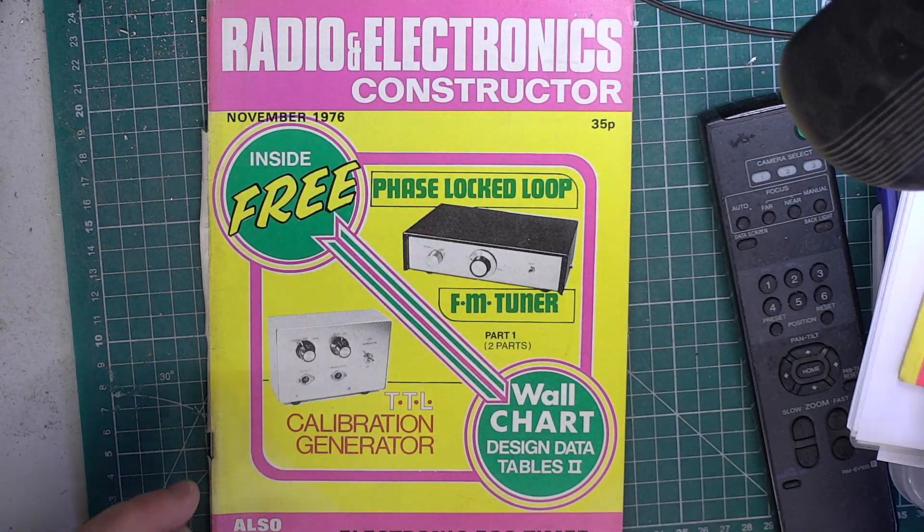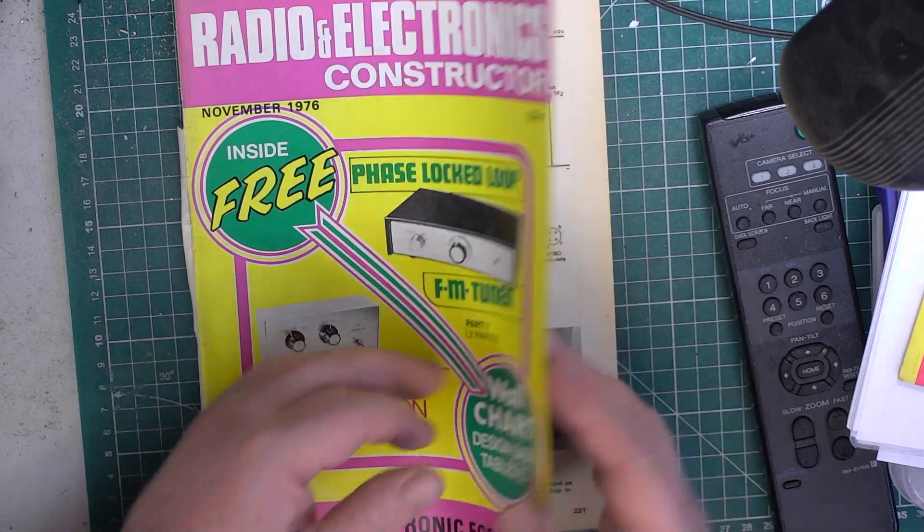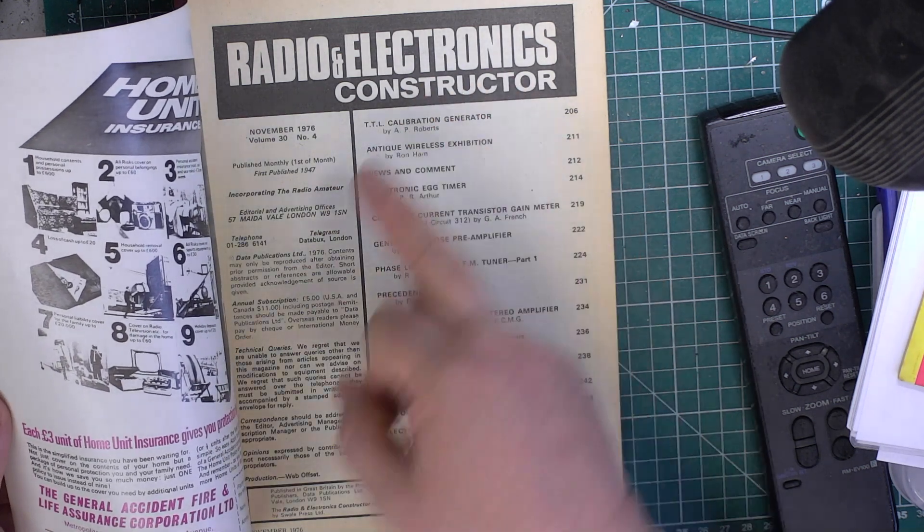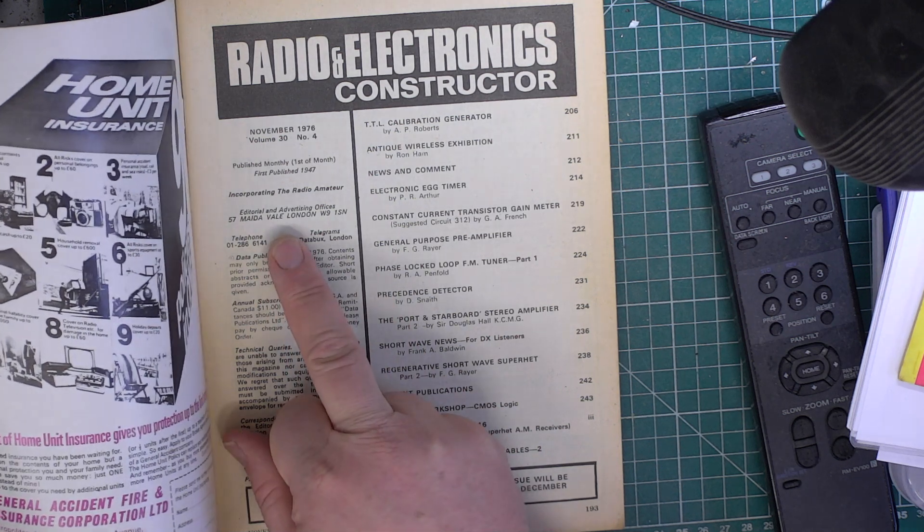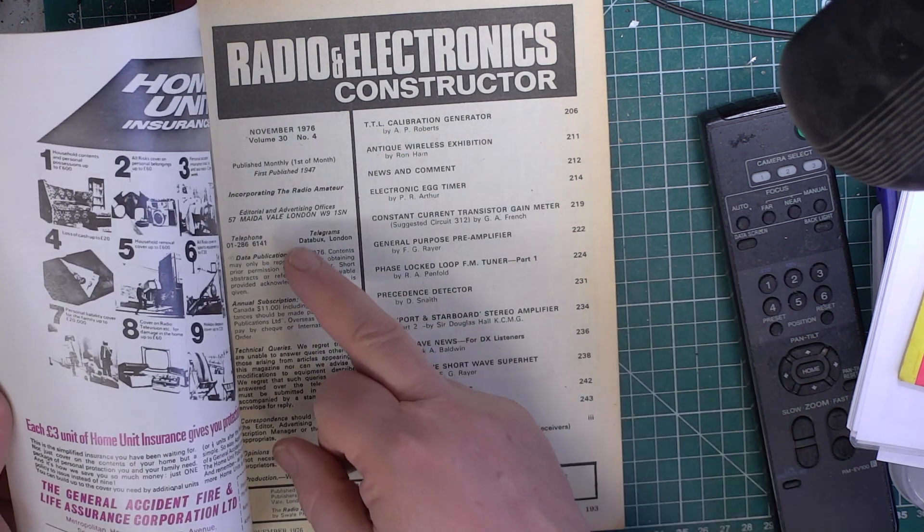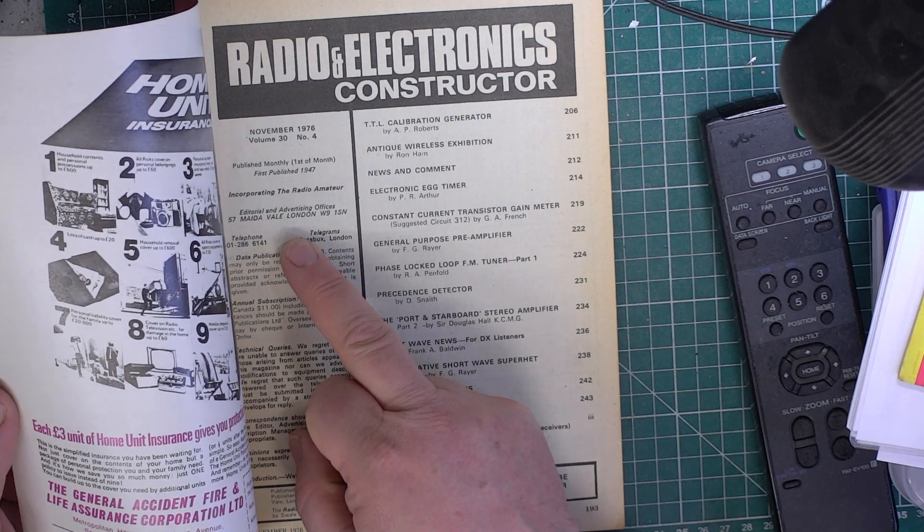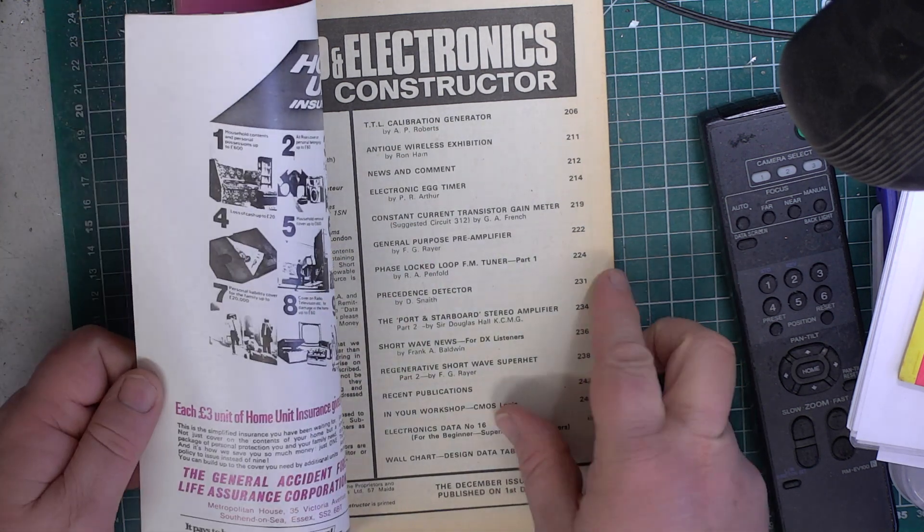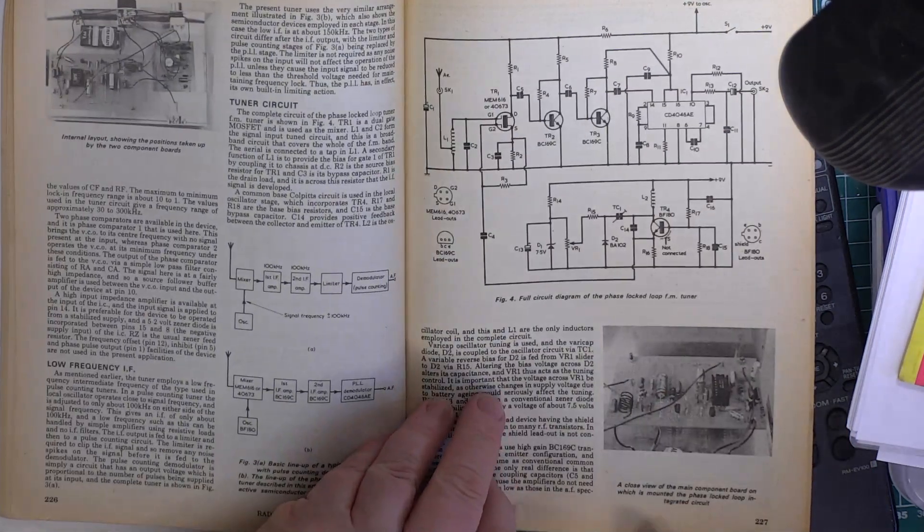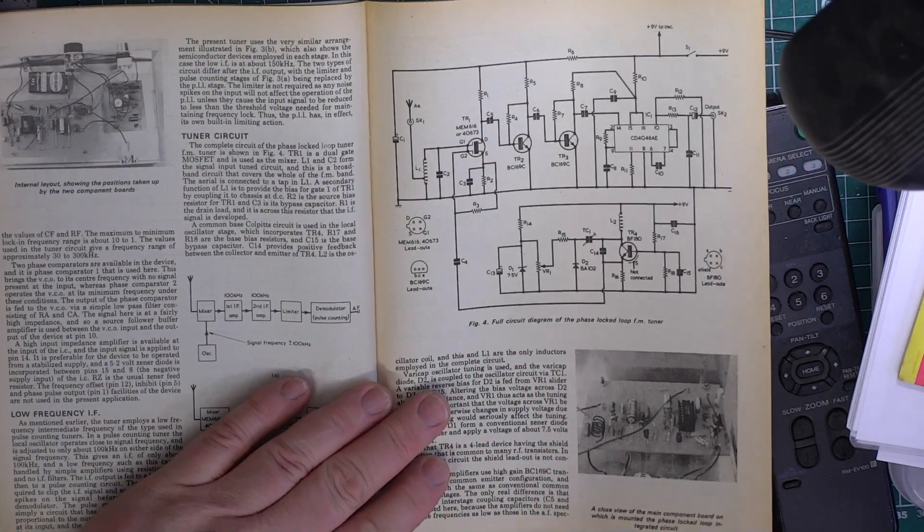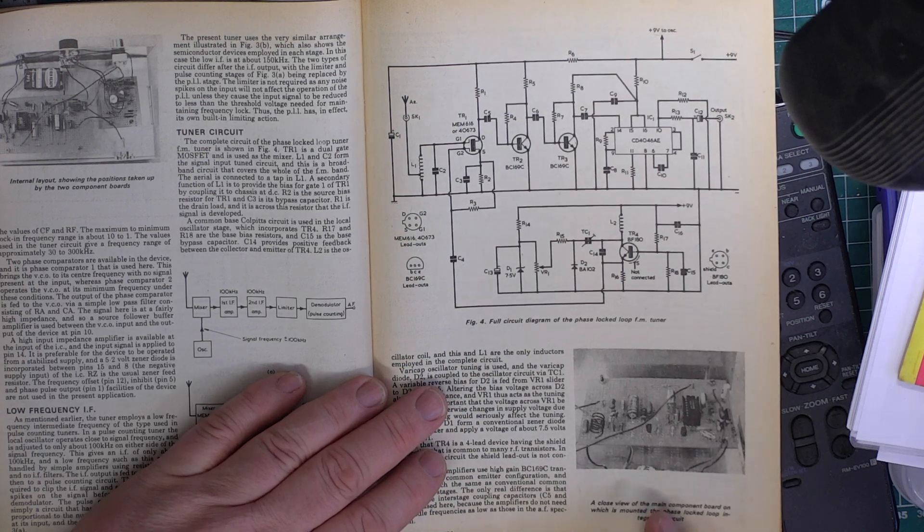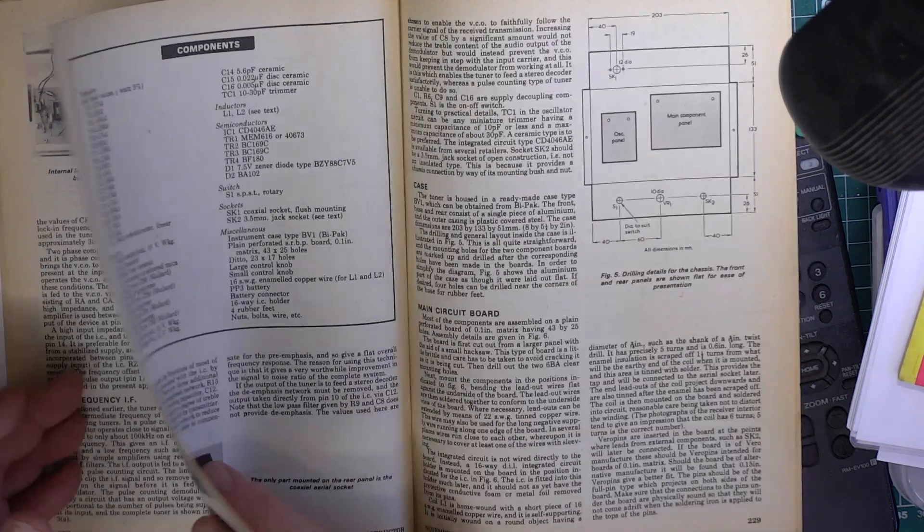Now we move forwards to November 76. By this time we've got the index where you'd expect it. Oh yes, it still says incorporating the Radio Amateur. The editorial office is 57 Maida Vale, London. I looked that up on Street View and it looks like it's flats these days. Some of the projects have names and I noticed one was a pub which was actually around the corner. Now, Robert Penfold, prolific writer. That's an interesting project, isn't it? An FM phase-lock loop tuner. Oh, I fancy doing that. Based on a CD4066 IC.